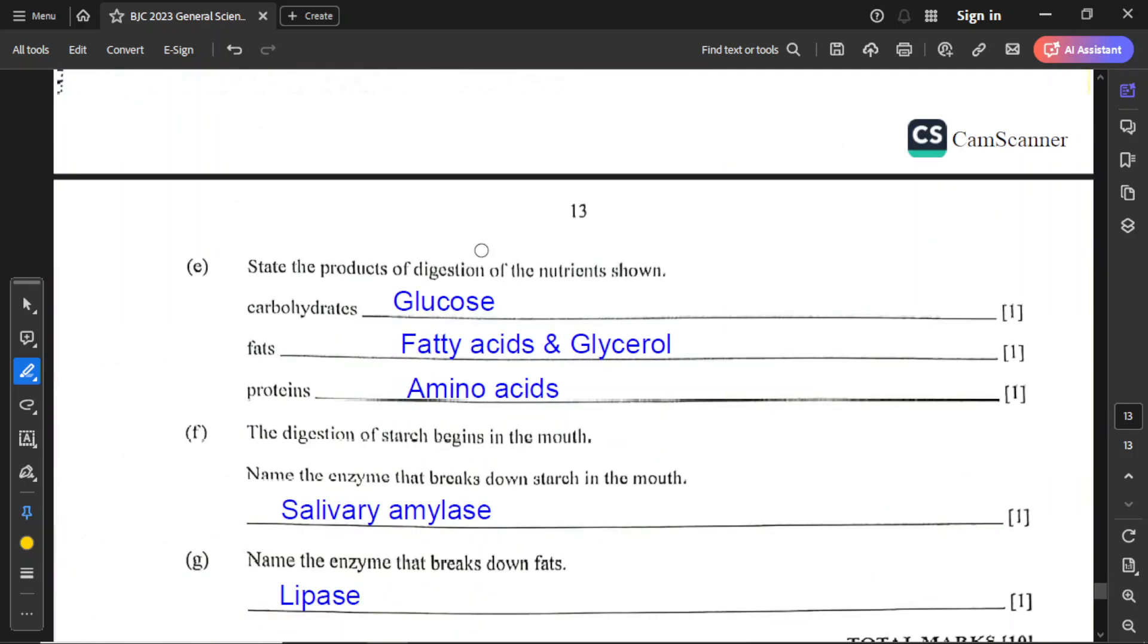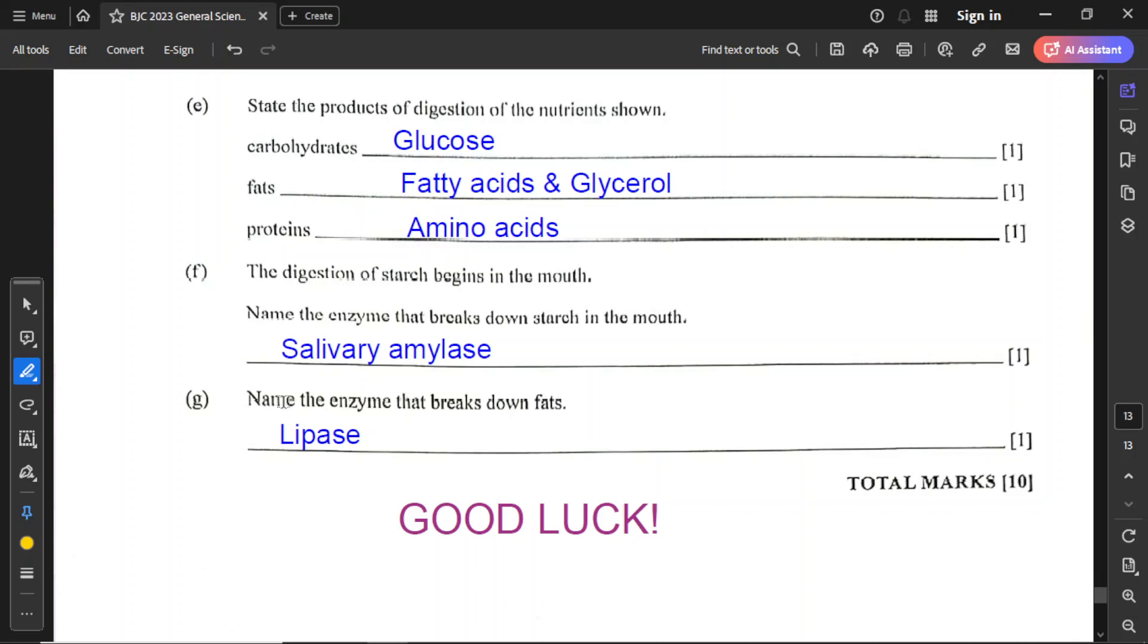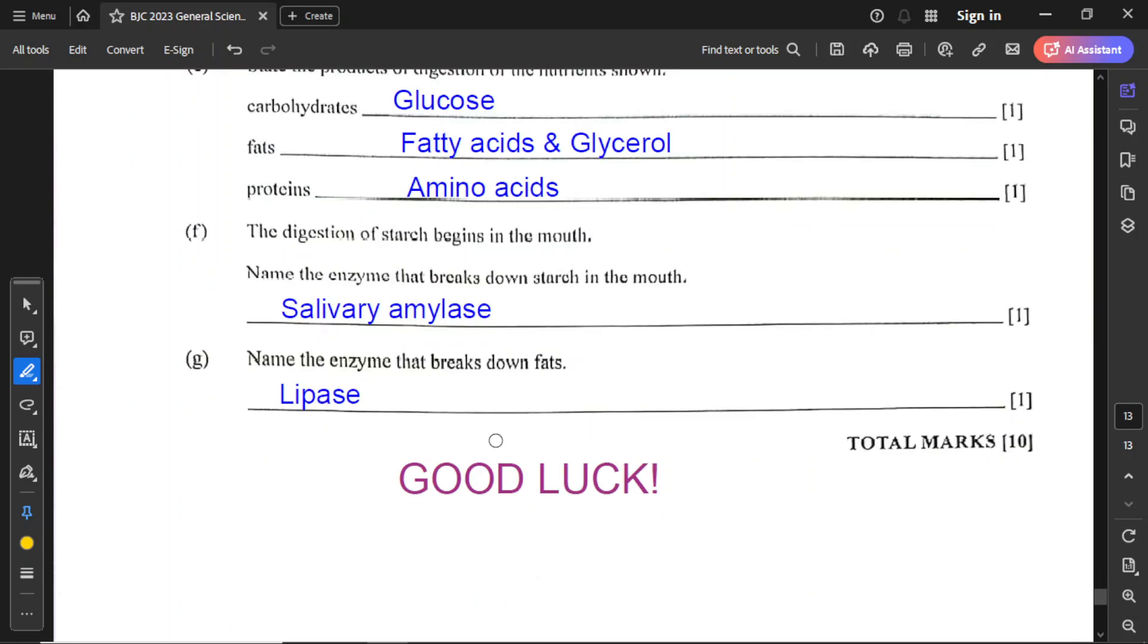Part E: state the products of the digestion of the nutrients shown. Carbohydrates will break down to glucose. Fats will break down to fatty acids and glycerol. Proteins will break down to amino acids. Part F: the digestion of starch begins in the mouth. Name the enzyme that breaks down starch in the mouth, and that is salivary amylase. The final question is to name the enzyme that breaks down fats, and this is lipase. Thank you for watching, and good luck on the examination. Take care, and we'll talk soon.